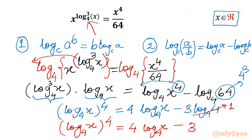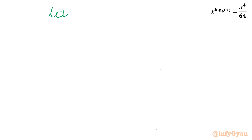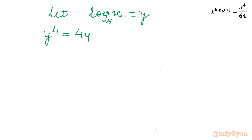The picture is clear — we need to use substitution. Let y = log_x base 4. So the equation becomes y^4 = 4y − 3. Taking all terms to one side: y^4 − 4y + 3 = 0. This is a quartic equation.